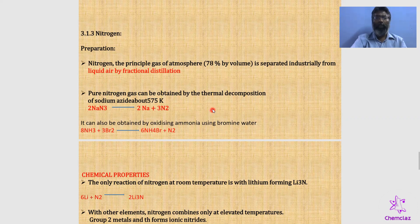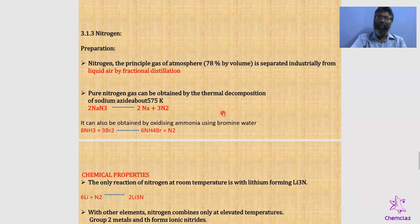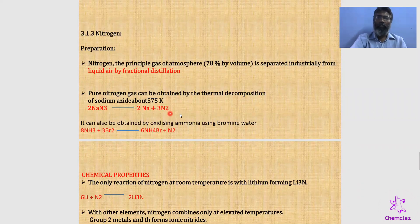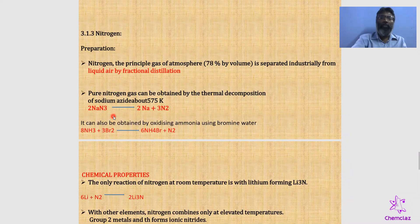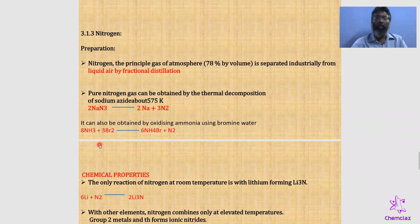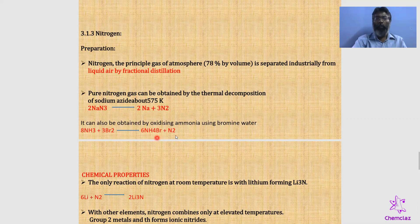The second method is preparation of pure nitrogen from an azide compound. Azide (N₃⁻) is an organic functional group, like carboxylic acid, hydroxyl, ketone, or ether groups. Sodium azide undergoes thermal decomposition at 575 K to give nitrogen gas (N₂). You can also prepare nitrogen from ammonia: ammonia undergoes oxidation with bromine, where bromine acts as the oxidizing agent, producing ammonium bromide and nitrogen gas.